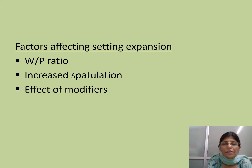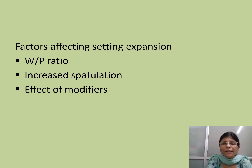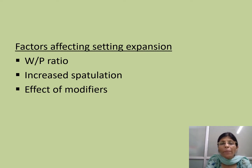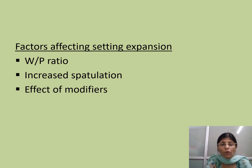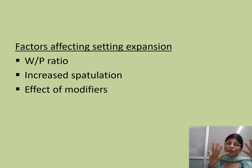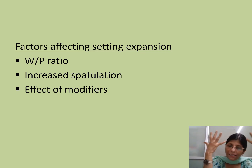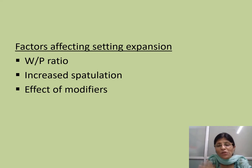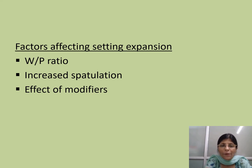Now we will see the factors affecting normal setting expansion. The most important factor is the water/powder ratio. If you take more water compared to powder, the setting expansion is less, because the growing particles stay apart from each other and there will be little pushing. If the powder is more compared to water — that is a lower water/powder ratio — then the expansion is more, and vice versa.